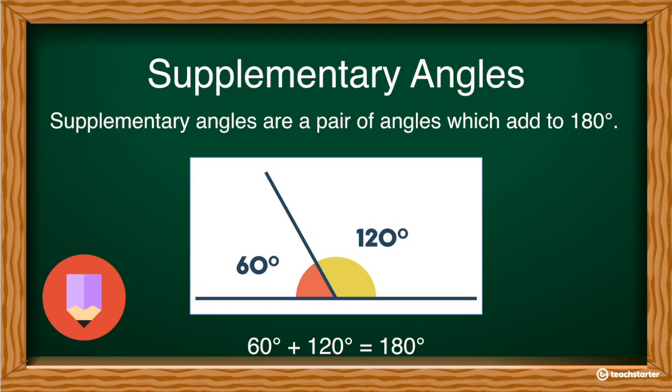Next, we have supplementary angles. In supplementary angles, they always add up to 180. So they form this nice straight line. And it's angles that form a nice straight line that is supplementary angles. And they add up to 180.